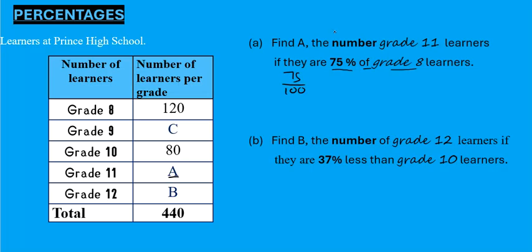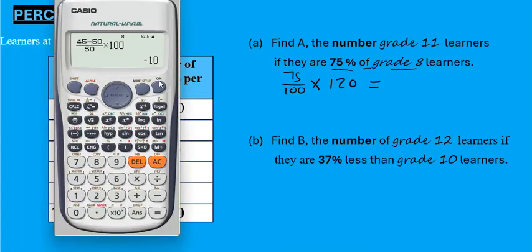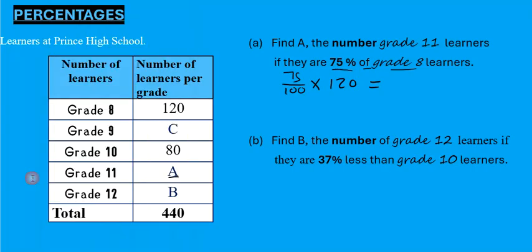Grade 11's are 75% of — and 'of' means times — grade 8. Grade 8 is 120. So we work that out: 75 over 100 times 120 gives us 90 learners. We have 90 learners in grade 11. That's the value of A.